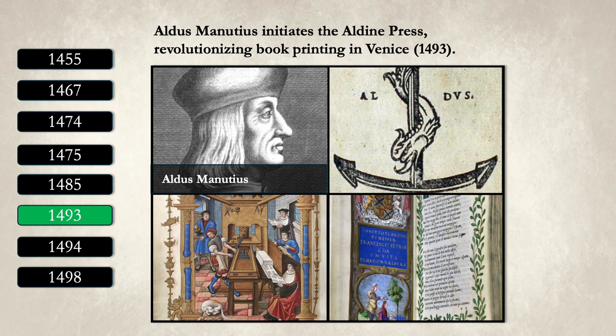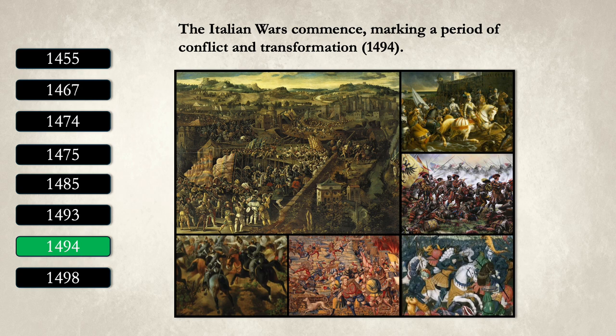In 1493, Aldus Manutius founded the Aldine Press in Venice, revolutionizing book printing with his innovations, including the introduction of italic type and smaller, more affordable books. This marked a significant shift in making literature accessible to a wider audience, further spreading Renaissance ideas and knowledge. Manutius's contributions helped democratize learning and fostered the spread of humanist thought throughout Europe.